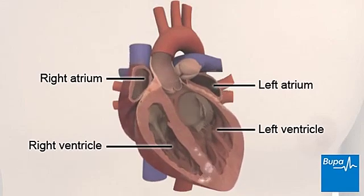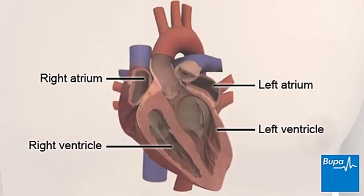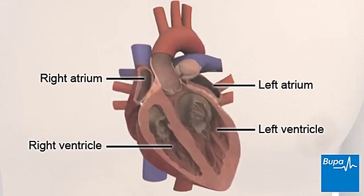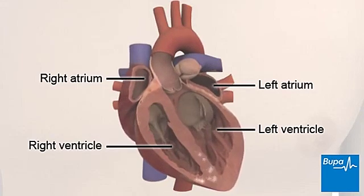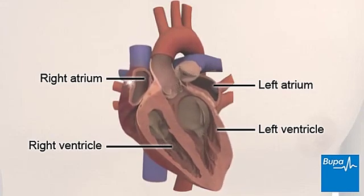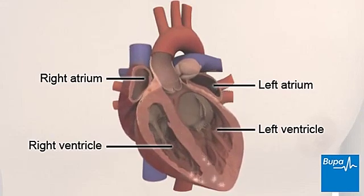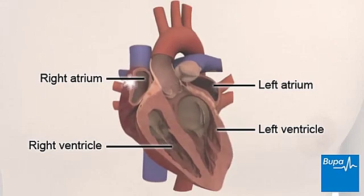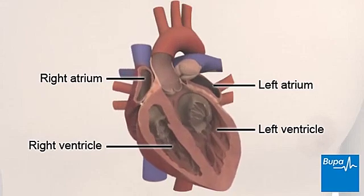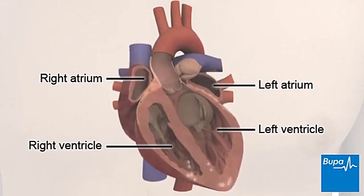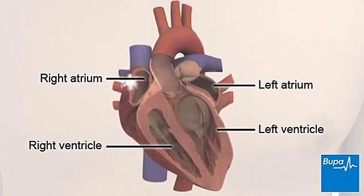The atria contract first, sending blood into the ventricles. The ventricles then contract, sending blood to the lungs and around the body.